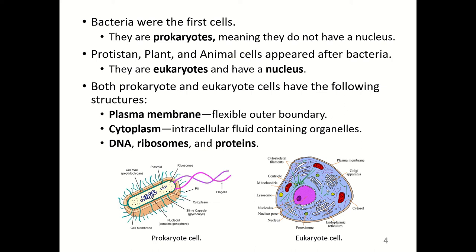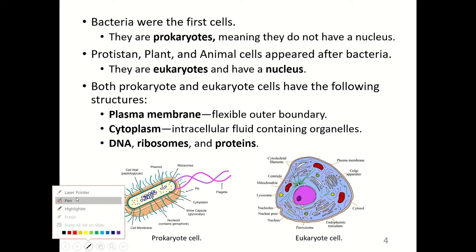Both prokaryote and eukaryote cells have the following structures: plasma membrane, which is the flexible outer boundary; cytoplasm, which is the intracellular fluid containing organelles; and non-membrane bound organelles, such as ribosomes, which synthesize proteins as a result of DNA. This illustration shows a typical prokaryote cell and a eukaryote cell.